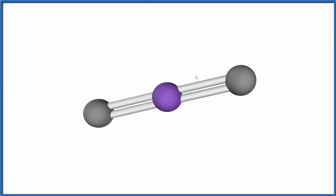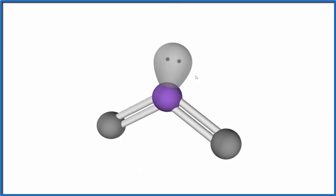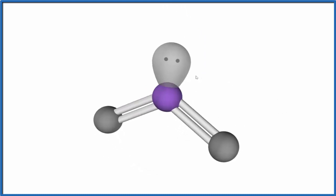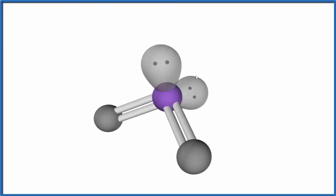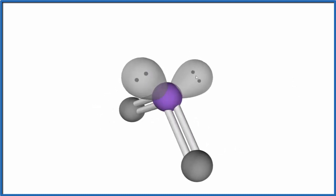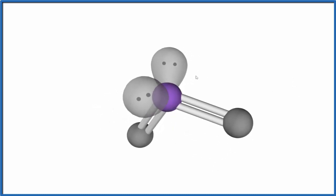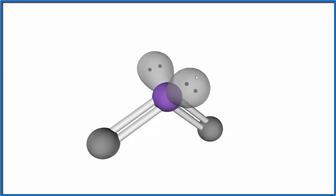Then we're going to add the lone pair. That pushes everything down. And then we add that single electron. We'll just treat it as a lone pair here. And you can see we end up with a bent molecular geometry for the ClO2 Lewis structure.